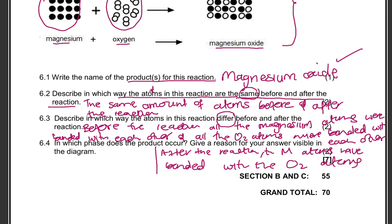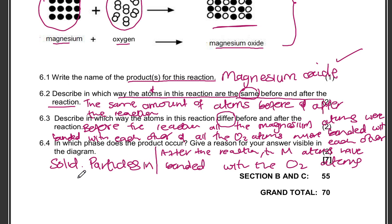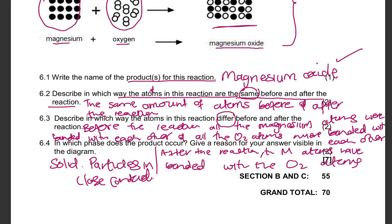The last question: in which phase does the product occur? Give a reason for your answer, visible in the diagram. The phase will be solid, and the reason is that the particles are in close contact — the particles are closely packed together and attracted to each other.